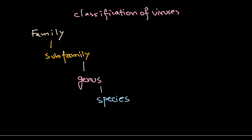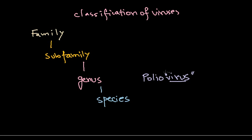Now, when we talk about a specific virus — for example, polio virus or rabies virus — that name refers to the genus of that viral particle. The genus for all viral particles is termed with the suffix 'virus'. So any time you see a name like 'polio virus', that is the genus level of that particular viral particle.